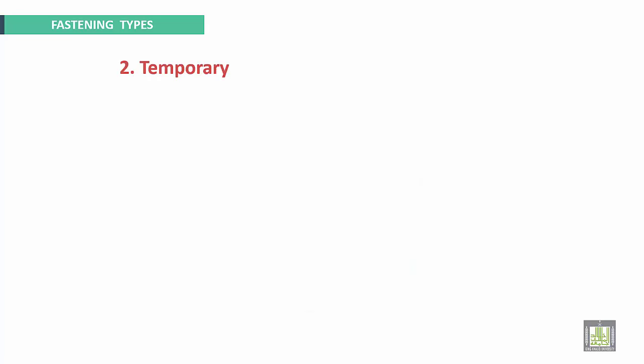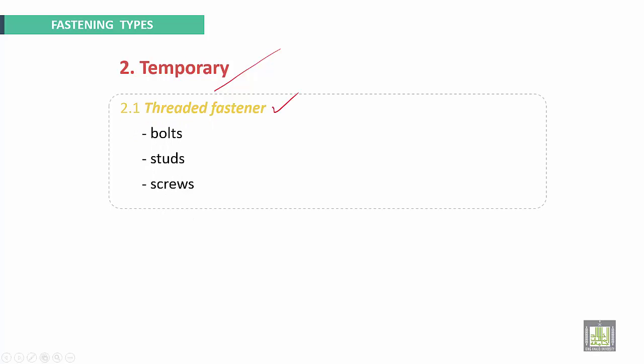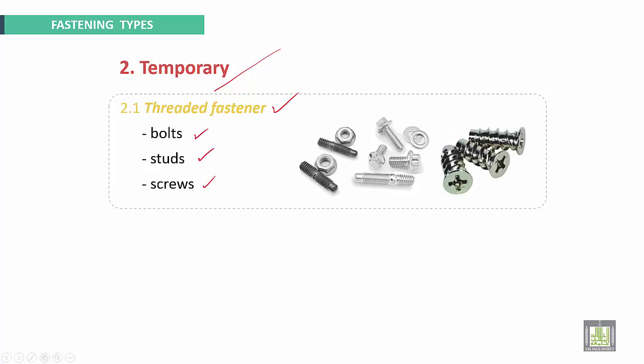The second type is called temporary fastening. The first example is threaded fasteners, something like bolts, studs, and screws. Here we have the studs. These are screws and bolts.